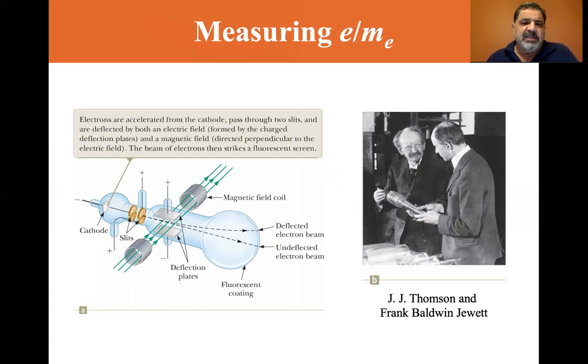So electrons are accelerated. They use this to measure the ratio of the electron charge to the mass of the electron. So the electrons are accelerated from the cathode. They pass through the two slits and deflected by both an electric field formed by the charge deflection plates and a magnetic field directed perpendicular to the electric field. So the beam of electron then strikes a fluorescent screen. So first they would tune it to where, if you look at the straight dash line, the undeflected electron beam would be there.